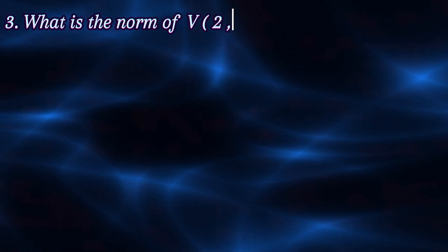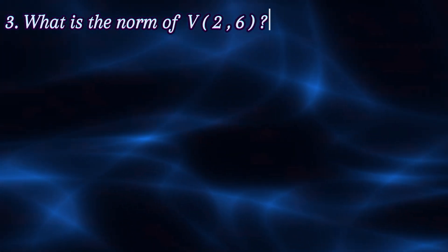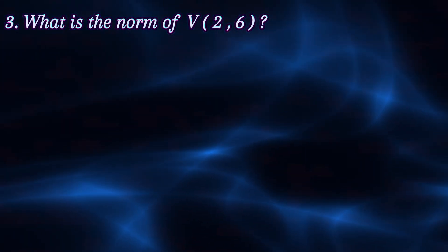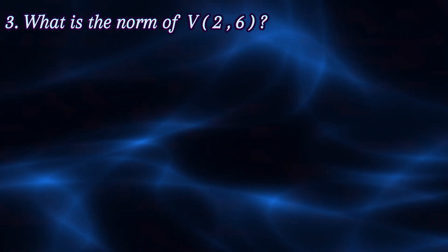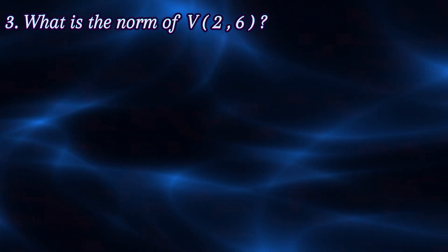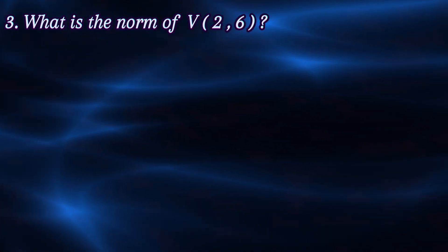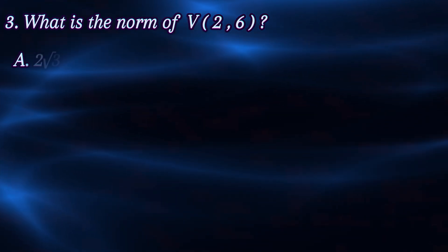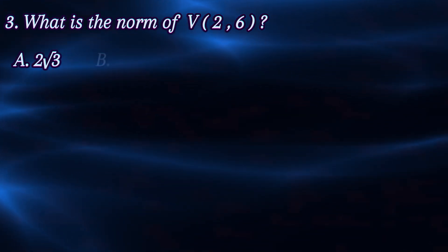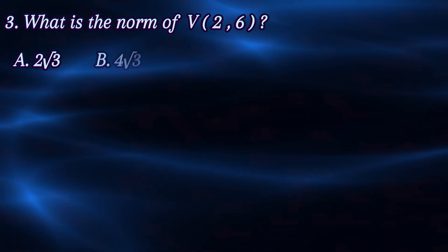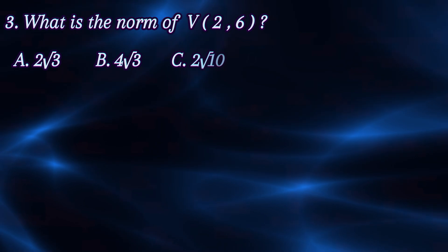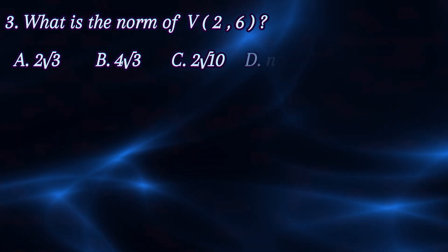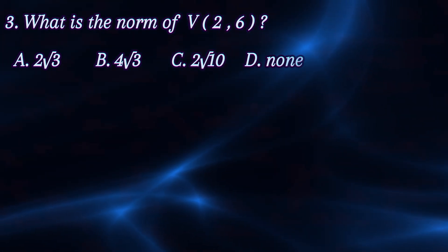What is the norm of vector v (2,6)? The norm, also called magnitude, of vector (2,6). The answer choices are: a) 2 radical 3, b) 4 radical 3, c) 2 radical 10, d) other.